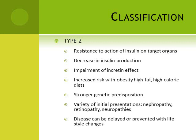Genetic predisposition is very strong in type 2 diabetics. A variety of initial presentations include nephropathy, retinopathy, and neuropathy, because the onset of the disease is very insidious — patients usually present with complications rather than with hyperglycemia. Since hyperglycemia is gradual in onset, the classic symptoms of polyuria and polydipsia are often not present in type 2 diabetics. The disease can be delayed or prevented with lifestyle changes, and introduction of certain agents can delay the onset in at-risk persons.